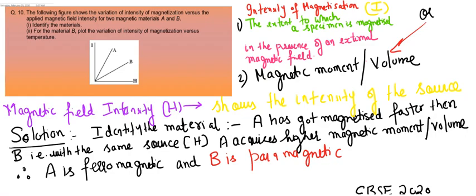between intensity of magnetization I and H, which is magnetic field intensity. Now, intensity of magnetization has to be understood - it is the extent to which a specimen is magnetized in the presence of an external magnetic field.